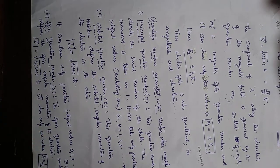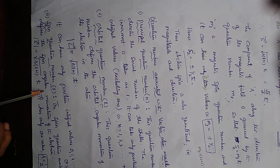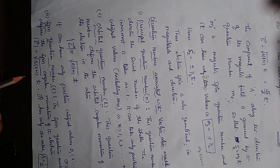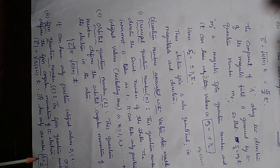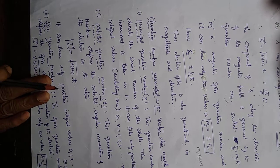One more quantum number is the spin quantum number S. The spin quantum number defines the spin angular momentum of the electron and it has only one value: S equal to one-half.